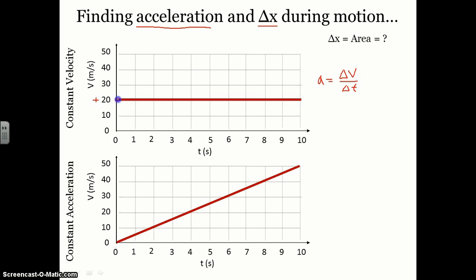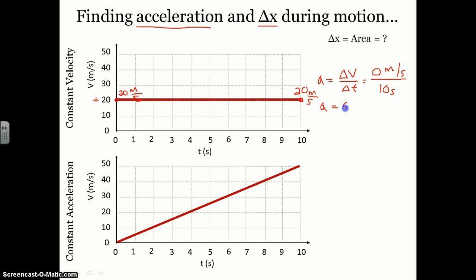If we pick two points — the beginning point and the end point — it starts with a positive velocity of 20 meters per second and ends with a positive velocity of 20 meters per second. So our change in velocity from positive 20 to positive 20 is 0 meters per second; there's no change in velocity. That happens over a time of 10 seconds, so our acceleration is 0 meters per second per second.